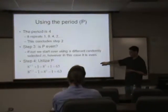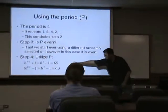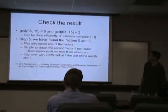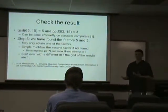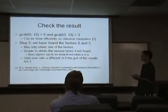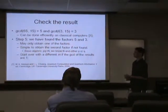Step 4, we utilize P to essentially get these two numbers, 63 and 65 here. So then using 63 and 65, we then try to find the greatest common denominator with the number we're trying to factor, 15.